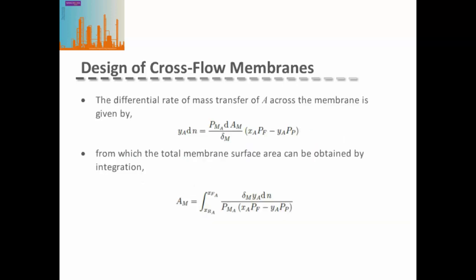The differential rate of mass transfer of species A across the membrane is given by the flux times a small change in the area of the membrane. If we want the total membrane surface area, we can obtain this by integrating between the feed composition and the retentate composition.